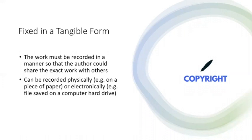Last, and arguably most important, let's examine what it means to be fixed in a tangible form. In practical terms, this just means that the work must be recorded in a manner so that the author could share the exact work with others. This sharing can be done physically or electronically. Therefore, a work is considered recorded if it is shown on a piece of paper or even if it is a saved file on a hard drive or a server. However, the key concept is that the work has to be actually recorded and not just a mere idea in somebody's head.